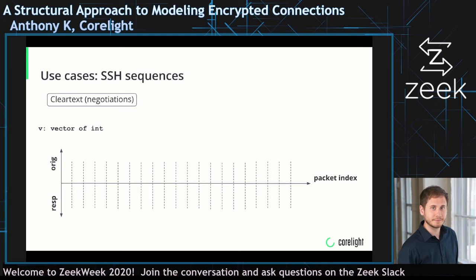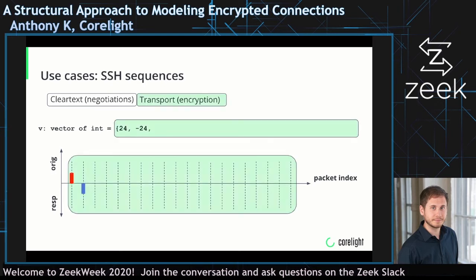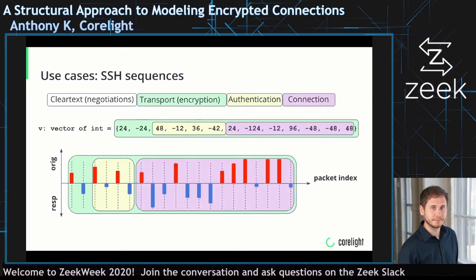We have a similar slide from a few slides back, but this one is specifically for SSH. At the beginning of SSH, represented by the white oblong shape, is the clear text negotiation that happens before encryption — we don't include that in our vector. After encryption begins, the transport sub-protocol takes place, followed by the authentication sub-protocol represented in yellow, and then the connection sub-protocol represented in purple. You can see how these three states are representative of any SSH connection — this is an abstraction.